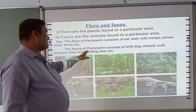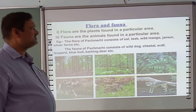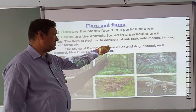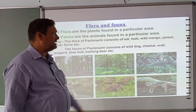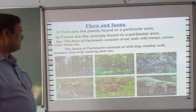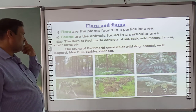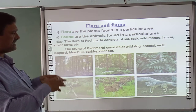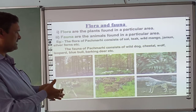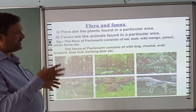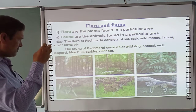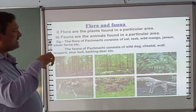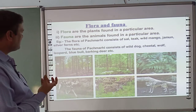For example, wild dogs, blue bull, and barking deer are found in a particular area. So we say that many animals and plants are found only in certain particular areas — if it is a plant it is flora, and if it is an animal it is fauna.